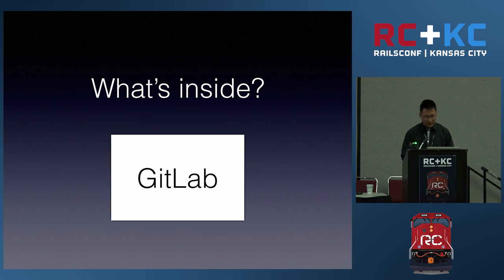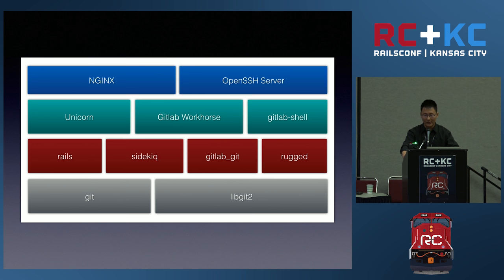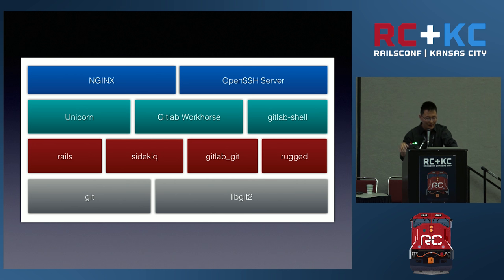If we open up the black box to see what's inside, it's basically structured like this — it's all open source, so you can download the source code. On the front end, there are two parts: Nginx and OpenSSH server. These components are inside GitLab because GitLab has an omnibus package that depends on them. Nginx handles HTTP, and OpenSSH handles the SSH port. For HTTP requests, they go to a second layer — Unicorn for ordinary Rails requests, and GitLab Workhorse for Git operations like clone and push, written in Go to make it fast.